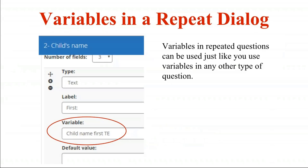Variables in a repeat dialogue are treated the same as any other variable. You can use different fields — button variables, radio buttons, checkboxes, text fields, dates, gender — all can be used in a repeat loop.